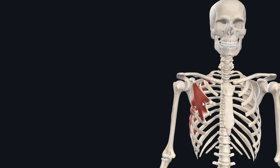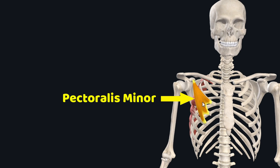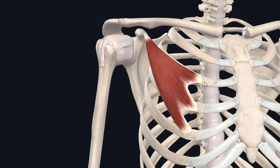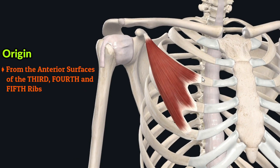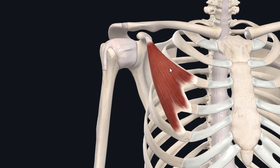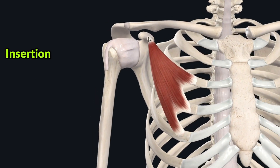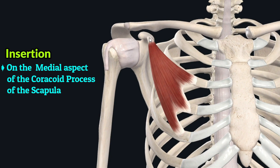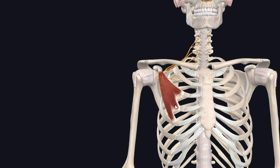Underlying the pectoralis major is this triangular muscle, the pectoralis minor. It originates from the anterior surfaces of the third, fourth, and fifth ribs, just lateral to the costochondral junctions, and inserts on the medial side of the coracoid process of the scapula.